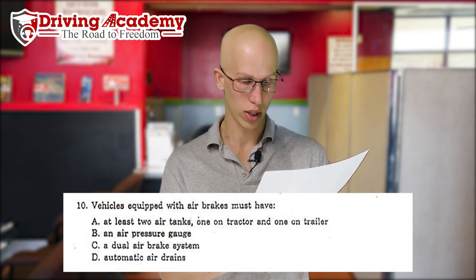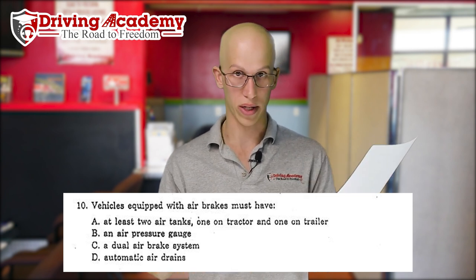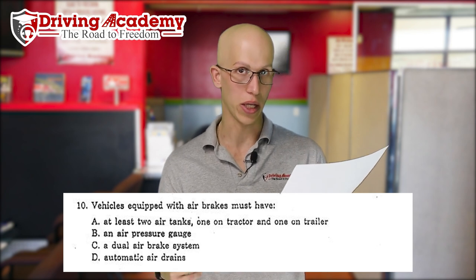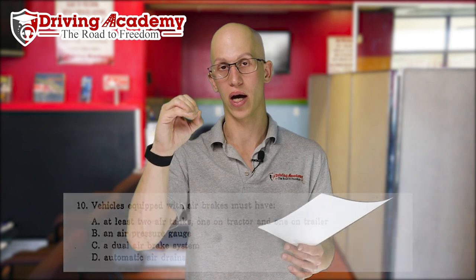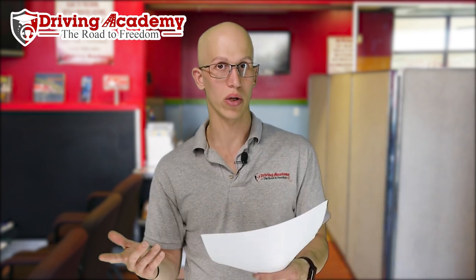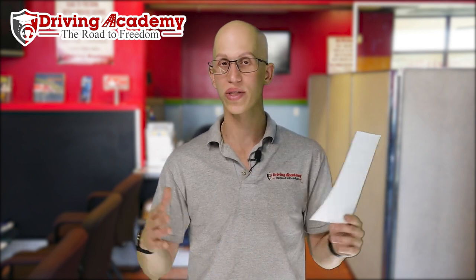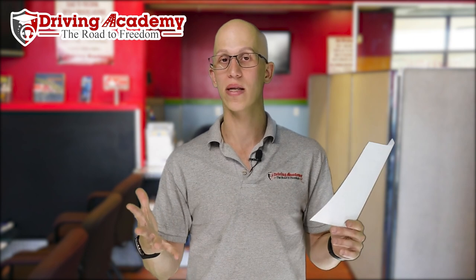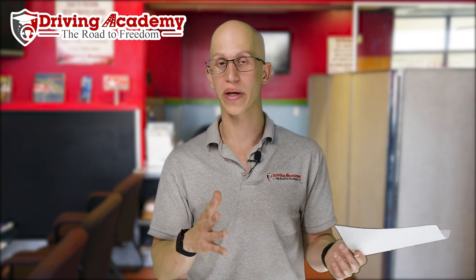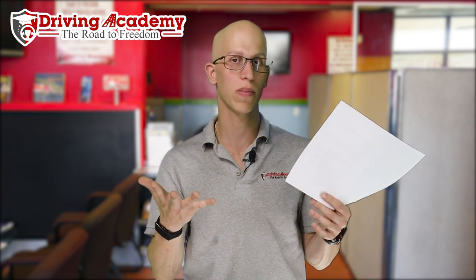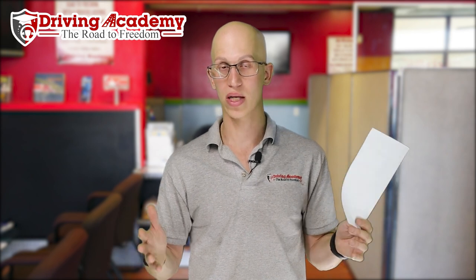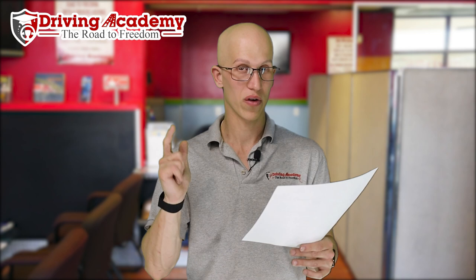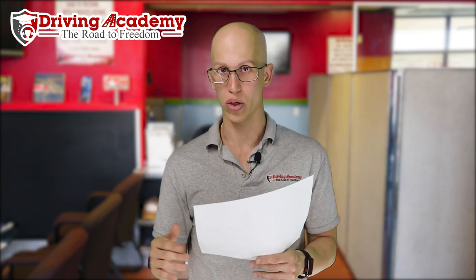Number ten: vehicles equipped with air brakes must have what? The correct answer is B — an air pressure gauge. If you're going to have air brakes, you need a gauge on your dashboard to tell you how much air pressure you have in your tanks, otherwise you have no idea if you have too much or too little. Any vehicle with air brakes must have an air pressure gauge. One common misconception: not all CDL vehicles have air brakes — all you need to be a CDL vehicle is to weigh more than 26,000 pounds. Some CDL Class B buses have hydraulic brakes, not air brakes.